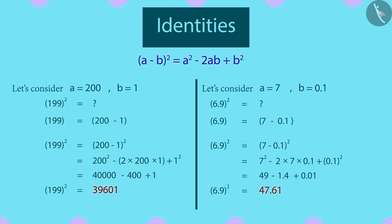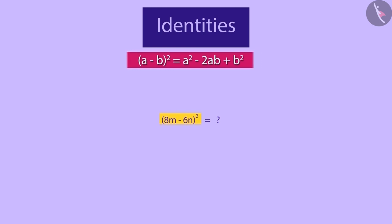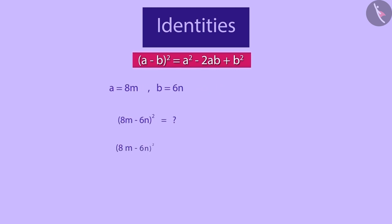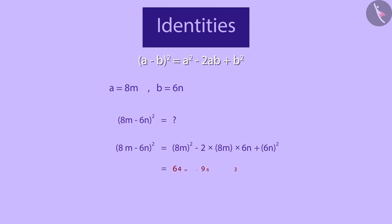Now, let's look at one more example. Can you find the value of 8m minus 6n raised to the power of 2? We can find the value of this by using the same identity. Here, a will be equal to 8m and b will be equal to 6n. So, by substituting this in the identity, we will get this. Therefore, the final answer will be this.